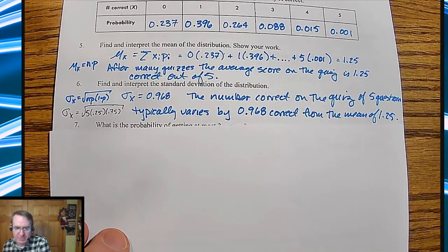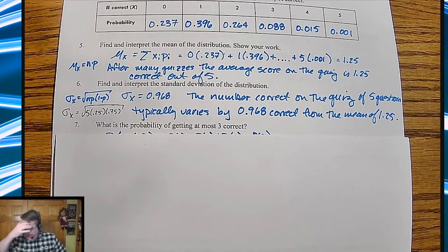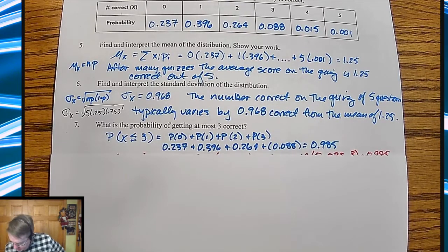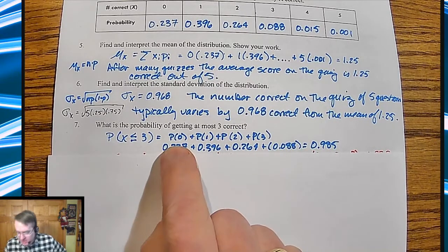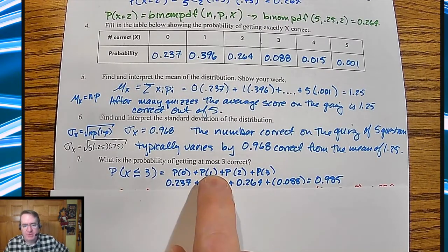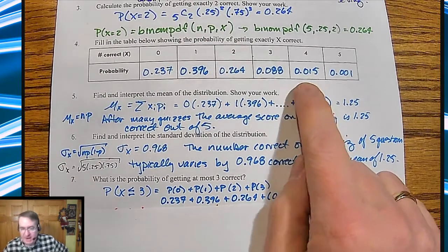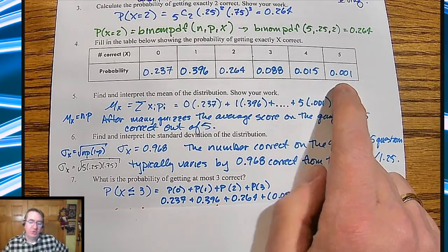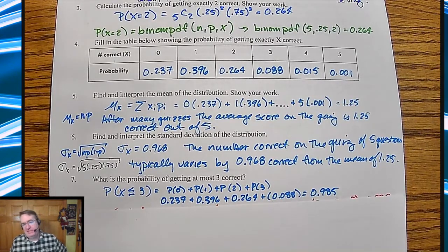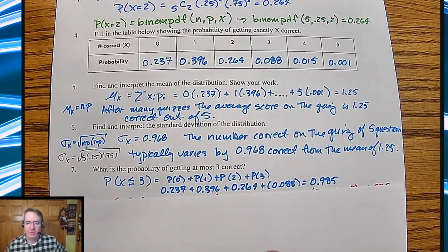Now the question becomes: what's the probability of getting at most 3 correct? What we'd normally do is add them all up: P(0) plus P(1) plus P(2) plus P(3). You could also say 1 minus P(4) minus P(5), which would be 1 minus about 16 thousandths. The difference is just rounding error, so we're close.